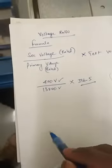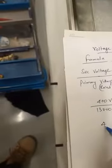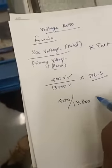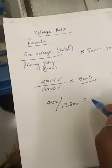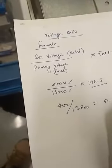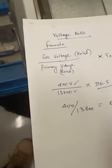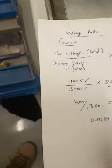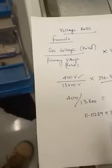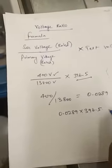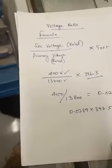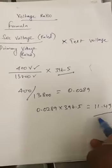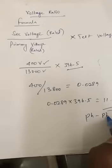So 400 divided by 13800 equals 0.0289, and 0.0289 times 396.5 test voltage equals 11.49. So 11.49 phase to phase you have to get.